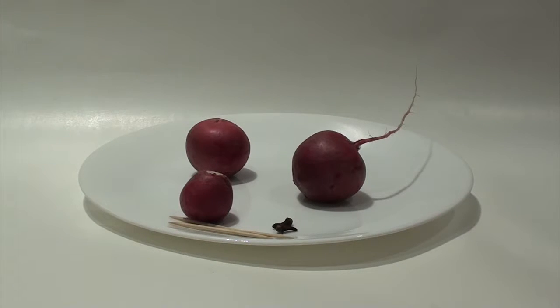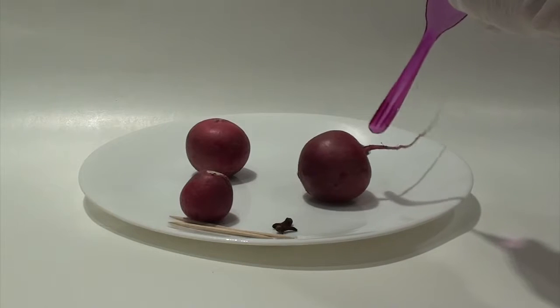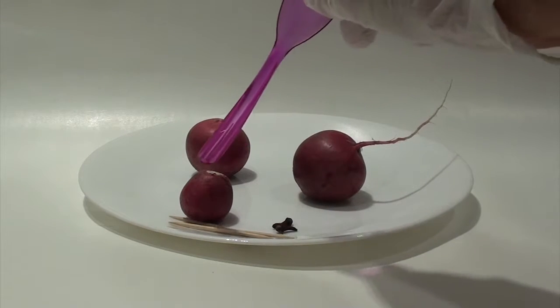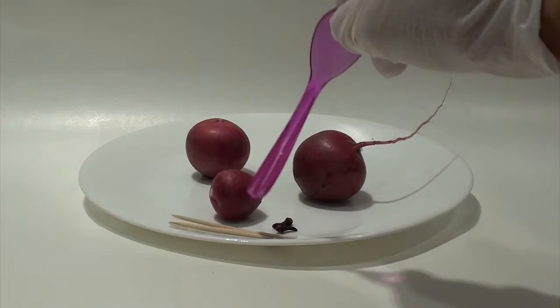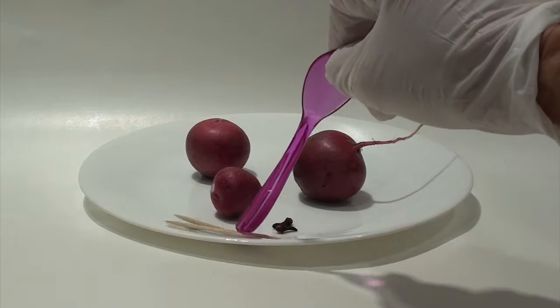Here I have three radishes that I washed and dried. I have a big one and I let the tail on. That's going to be the tail of my mouse. And then I have a smaller one that's going to be my head and I have three toothpicks.